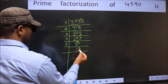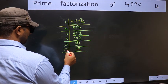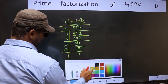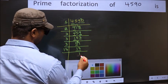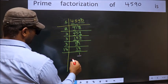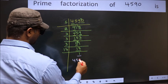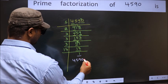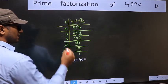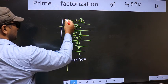Now here we have 17. 17 is a prime number, so 17 times 1 is 17. So we got 1 here. So the prime factorization of 4590 is the product of these numbers.